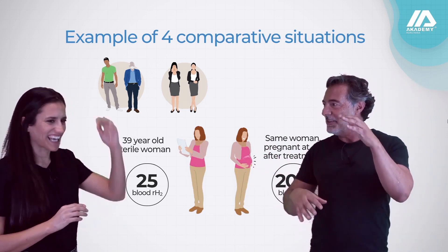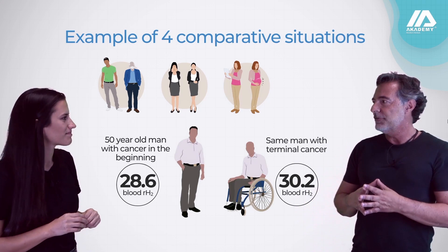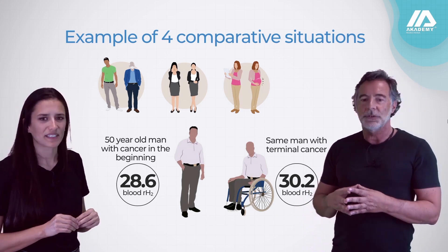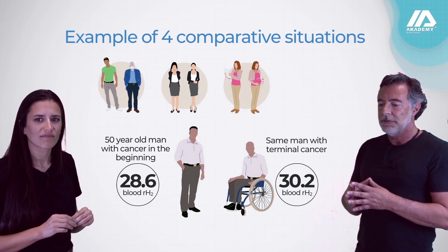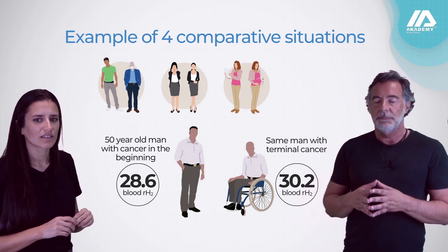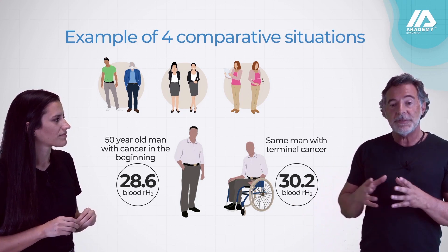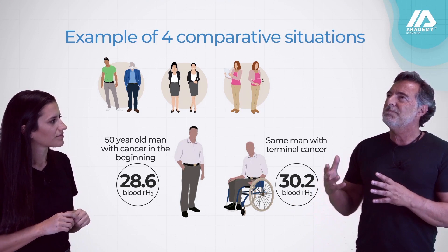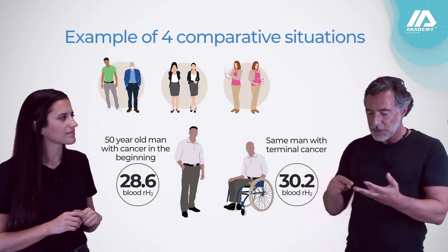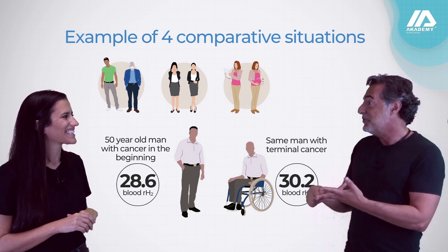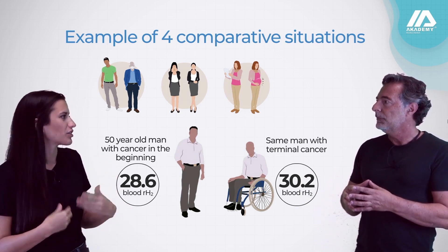If you remember the last slide about the scale, the amount of electrons is completely different between those values. And one of the terrible diseases of our days — cancer — shows very high RH2 values in the blood. But if you understand this concept, it's amazing, because you can choose fruit, you can choose water, you can choose what medicine to take, and you can evaluate the effects of your lifestyle in your blood, urine, and saliva.